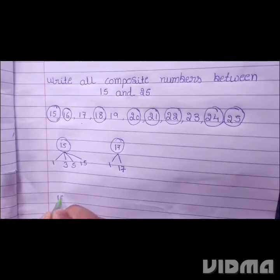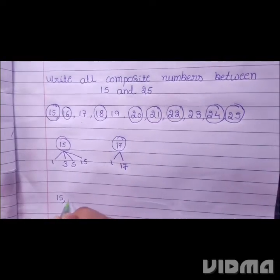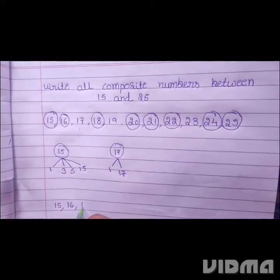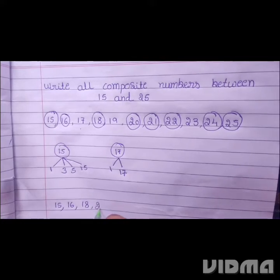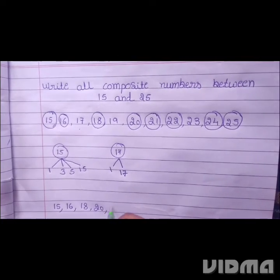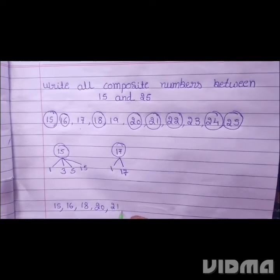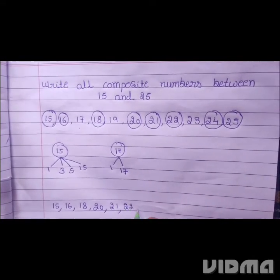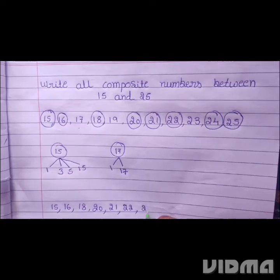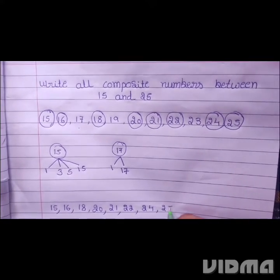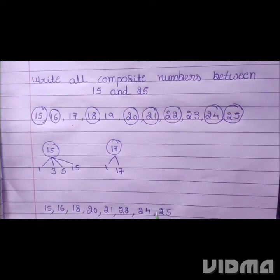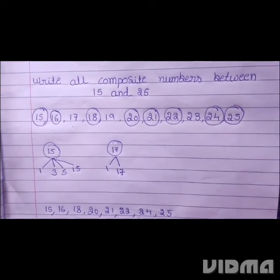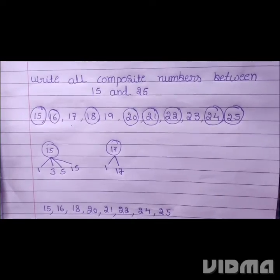Answer: 15, 16, 18, 20, 21, 22, 24, 25. These are the composite numbers between 15 and 25.